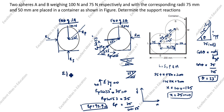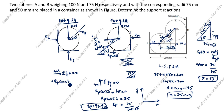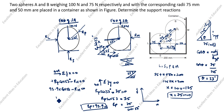Next, taking summation of Fx equals zero — horizontal direction, rightward positive. RP cos 53 degrees is positive, and RM acts in the opposite direction so it is minus RM equals zero. Substituting RP as 93.9: 93.9 into cos 53 degrees minus RM equals zero. Therefore RM equals 56.51 Newton.